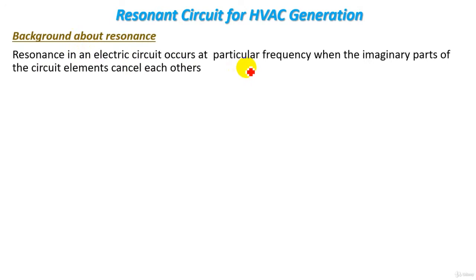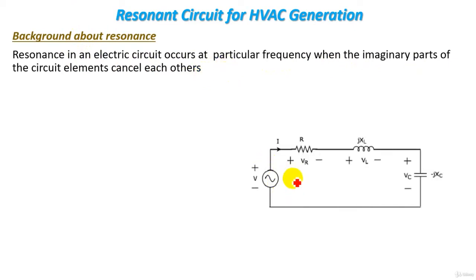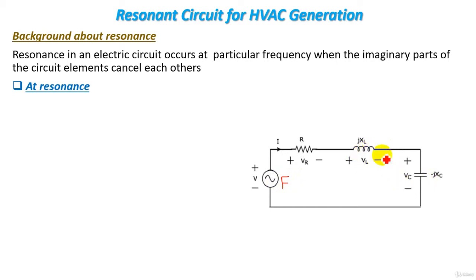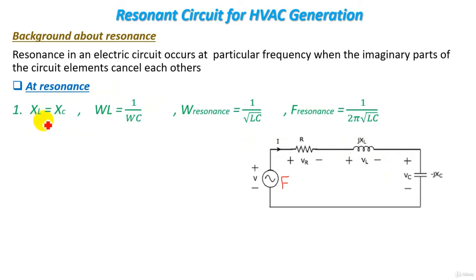Resonance in an electric circuit occurs at a particular frequency when the imaginary parts of the circuit elements cancel each other. If we have an LC circuit with a supply voltage V and frequency F, and if by chance the reactance of the capacitor equals the reactance of the inductor — Xc equals XL — then the effect of the capacitor cancels the effect of the inductor. At this moment, resonance occurs. So the main condition of resonance is that XL equals Xc.